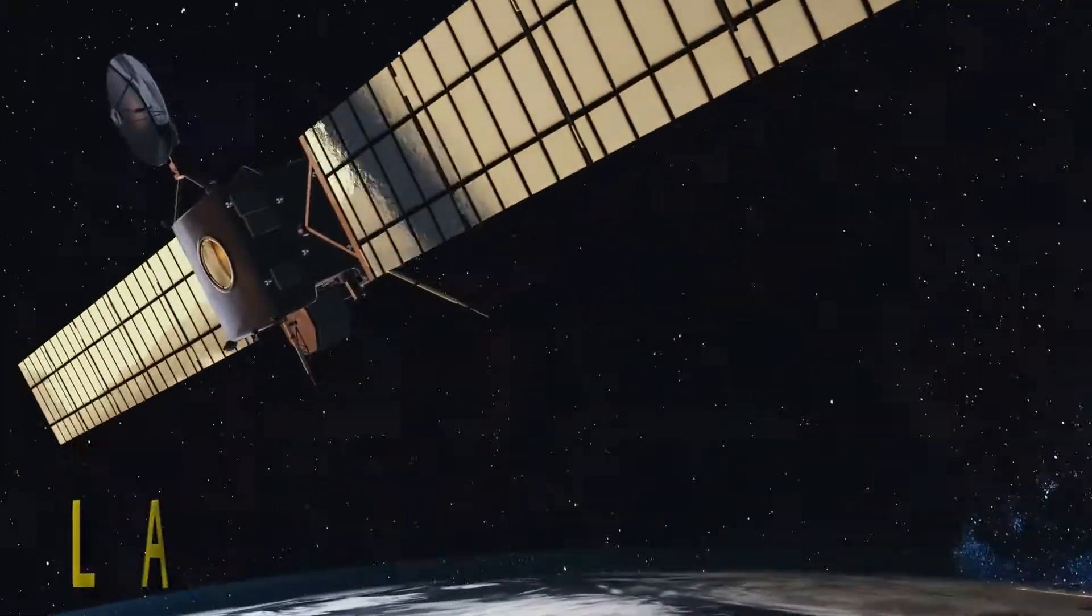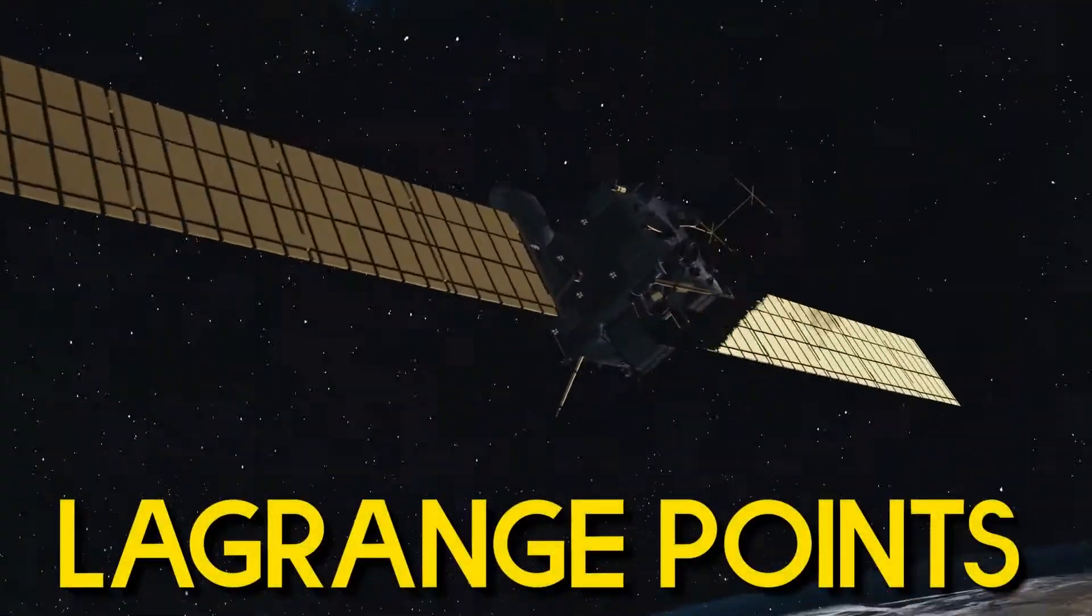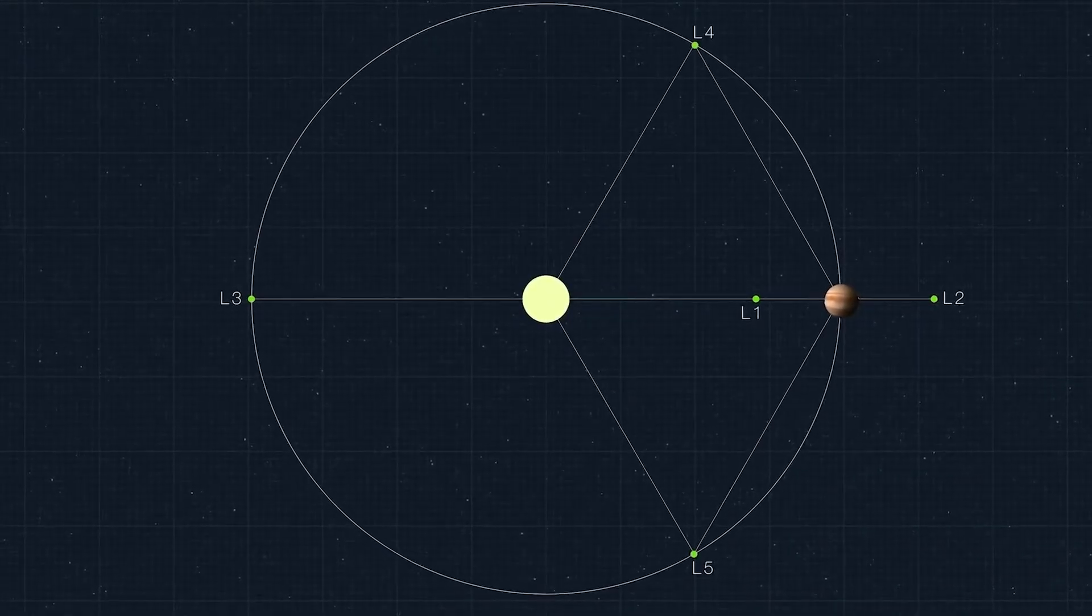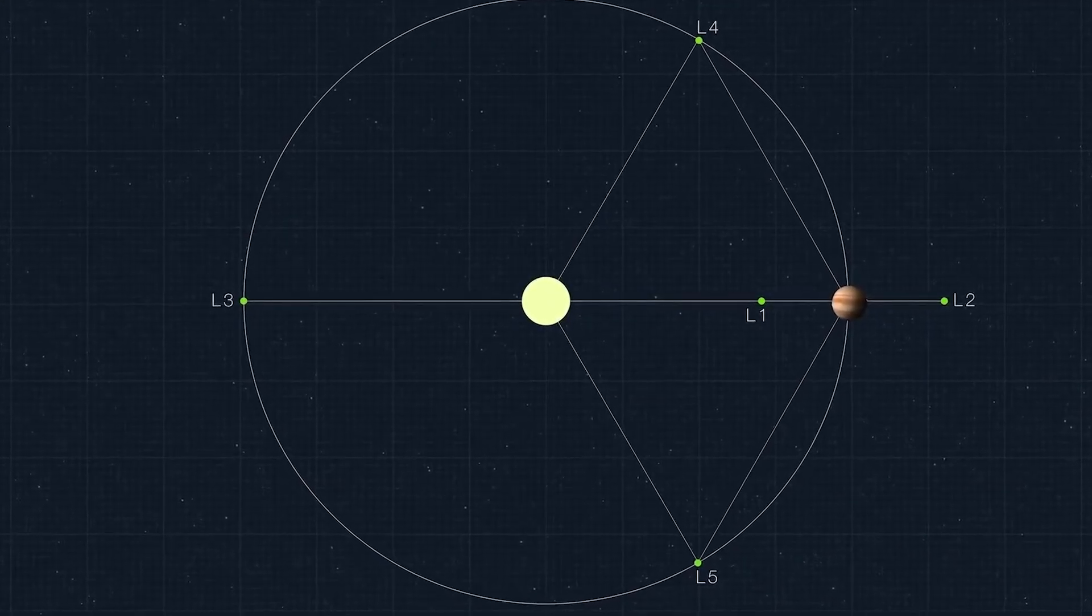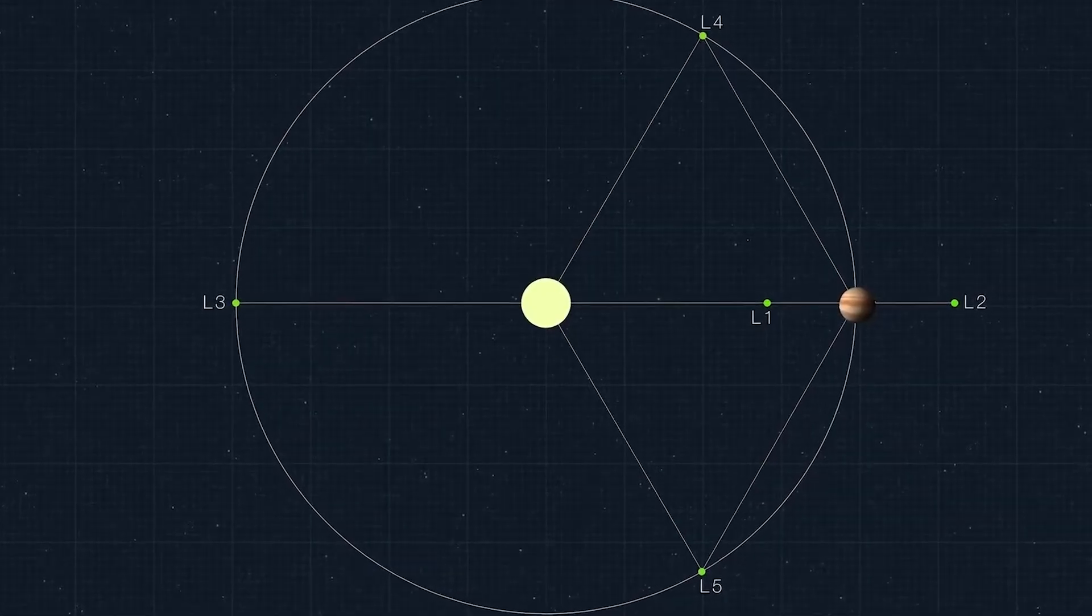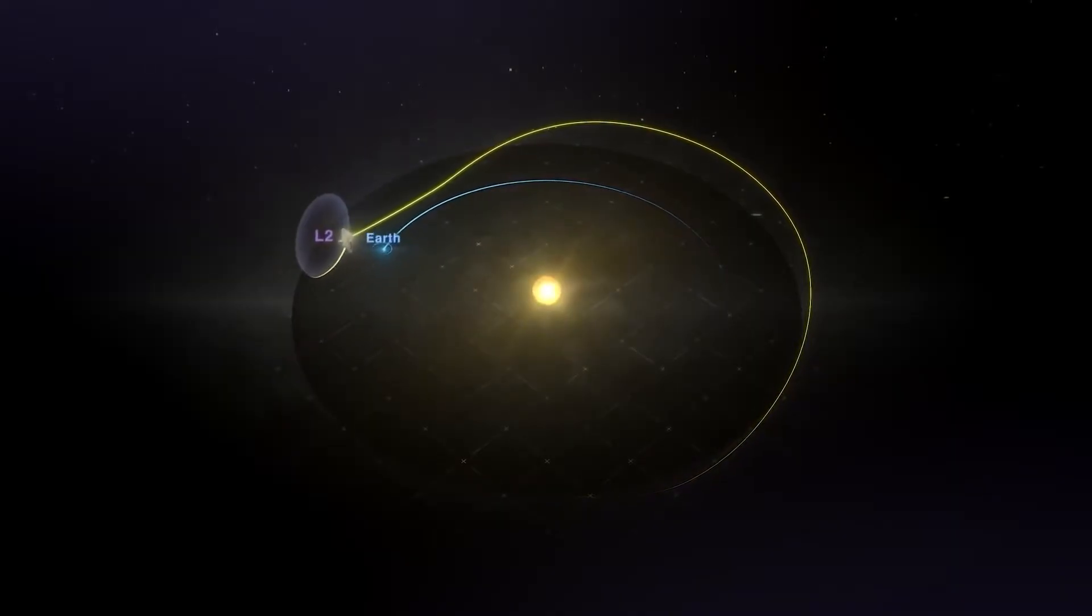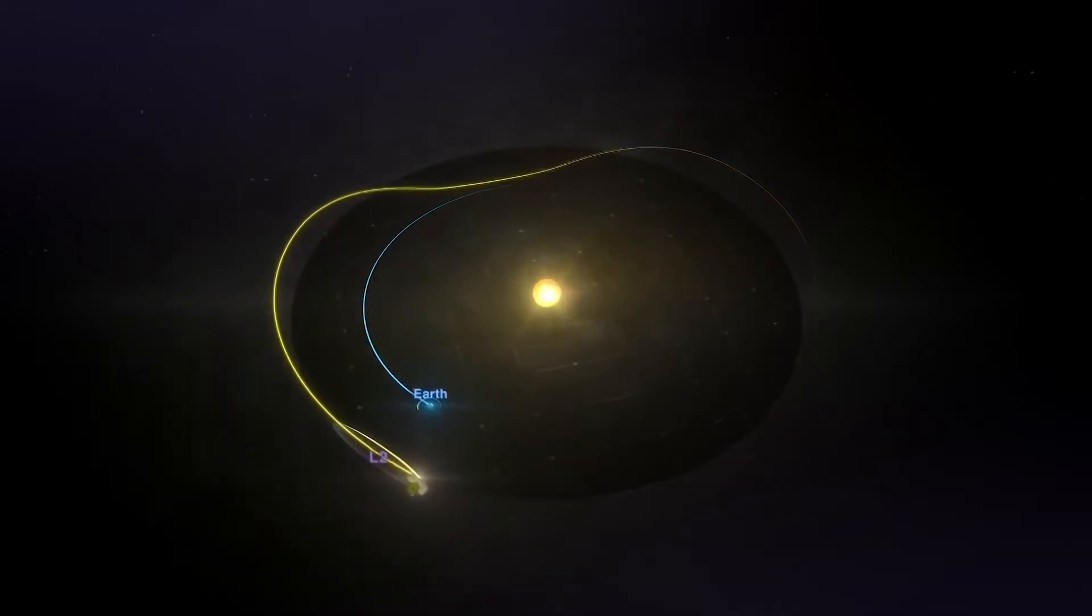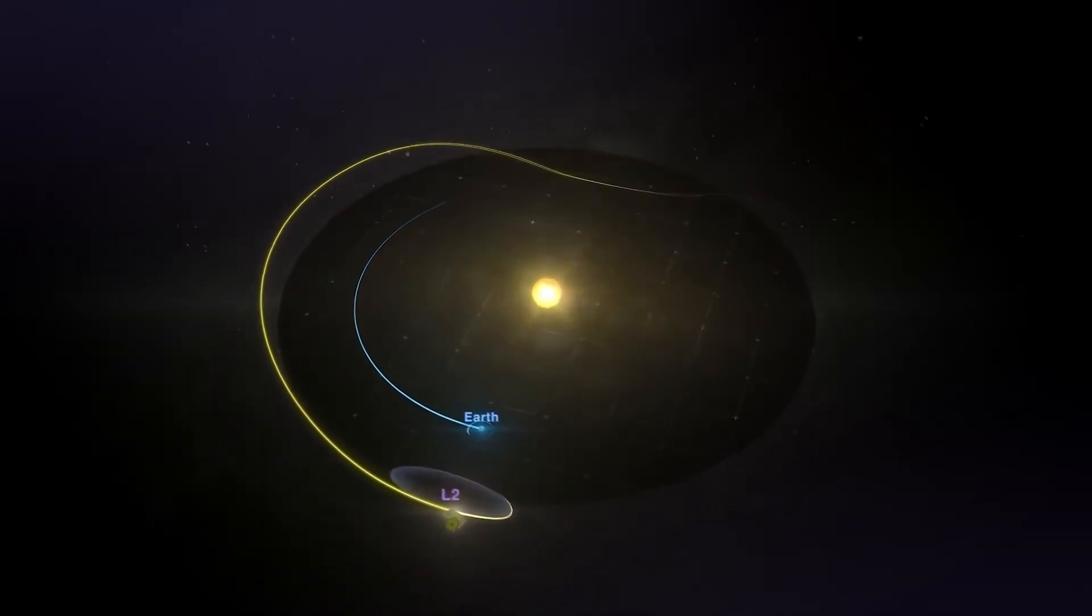Sometimes, satellites are positioned at what's called Lagrange points. These points are stable points in space where the gravitational forces of Earth and another body, like the Sun, exert the same force on the satellite, keeping it stationary relative to the two bodies, to Earth and the Sun.